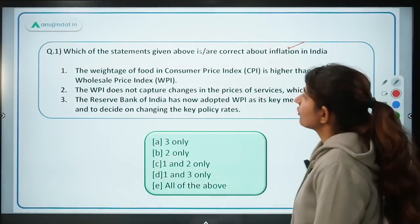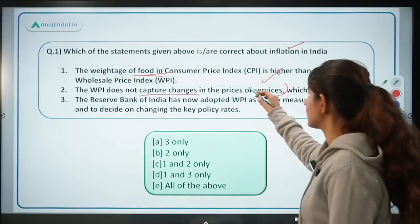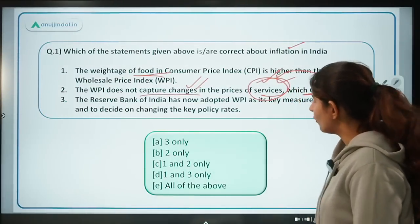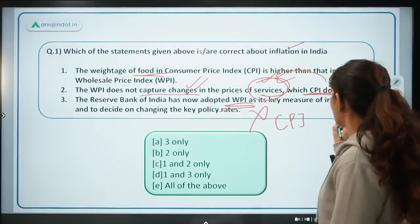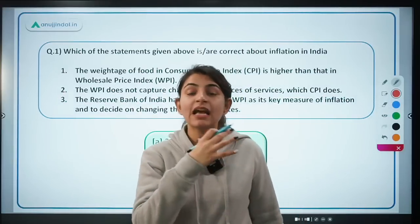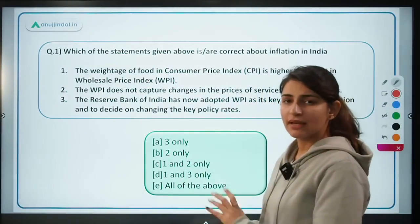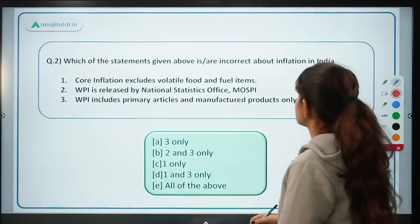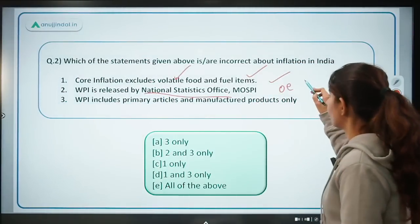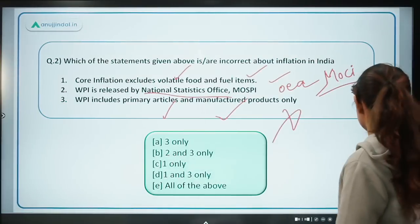Practice questions: The weightage of food in CPI is higher than in WPI — correct. WPI does not capture changes in the prices of services — absolutely correct, as WPI covers goods only while CPI covers services. The statement that RBI has adopted WPI is wrong — RBI uses CPI combined for monetary policy. Core inflation excludes volatile food and fuel items — correct. WPI is released by the Office of Economic Advisor under the Ministry of Commerce and Industry, not NSO. WPI includes primary articles, manufactured products, AND fuel and power — not just the first two.